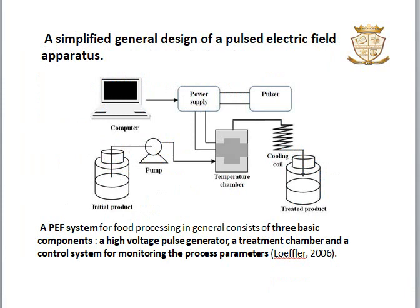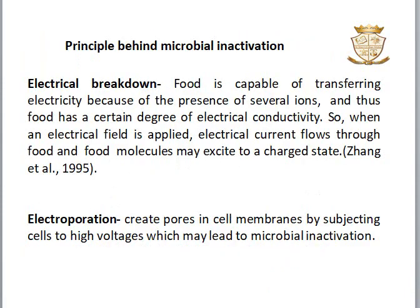This is a simplified design of a Pulse Electric Field apparatus. A PEF system for food processing generally consists of three basic components: a high voltage pulse generator, a treatment chamber, and a control system for monitoring the process parameters.